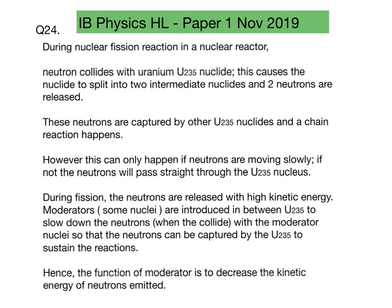During a nuclear fission reaction, a neutron collides with a uranium-235 nucleus and you get two intermediate nuclides and two more neutrons. These neutrons are then captured by further U-235 nuclides and a chain reaction happens.